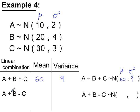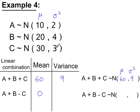The normal variable a plus b minus c will have a mean of 10 plus 20 minus 30, so the mean is 0. And the variance, adding the variances together, is 9.